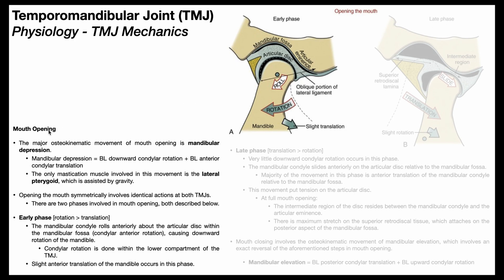If we look at mouth opening, what is the major osteokinematic movement? If you open your mouth, the mandible moves down, so we would say it's mandibular depression. Now this type of depression is different than scapular depression, which is a simple downward glide or downward translation. This is not a simple downward translation — it's actually a combination of two movements: bilateral downward condylar rotation and bilateral anterior condylar translation.